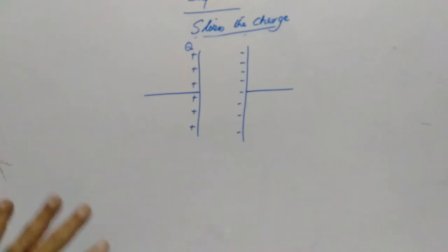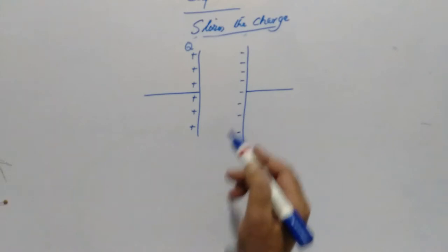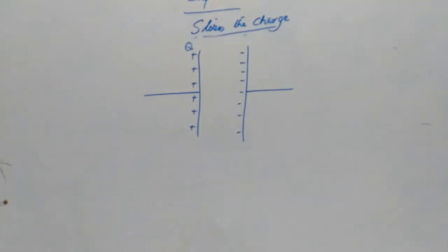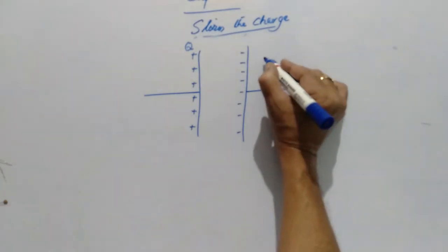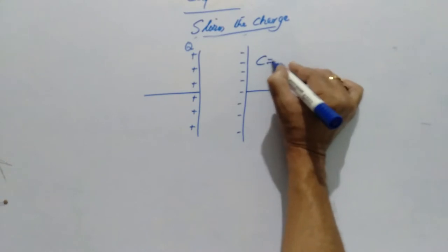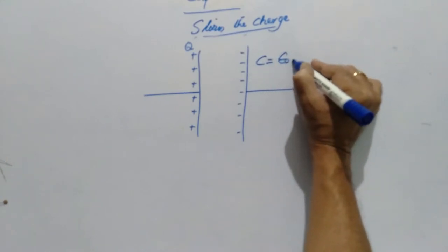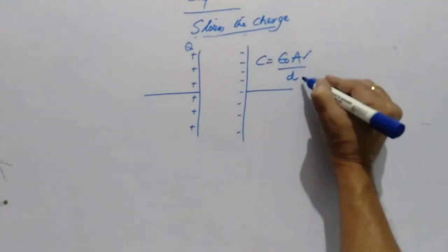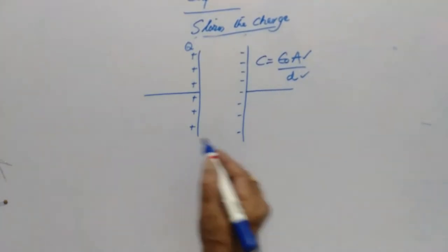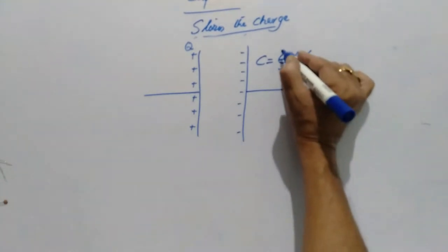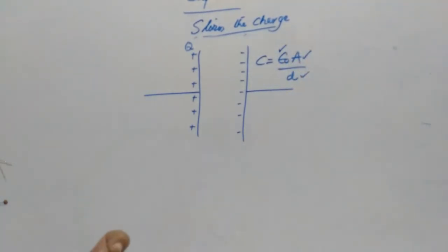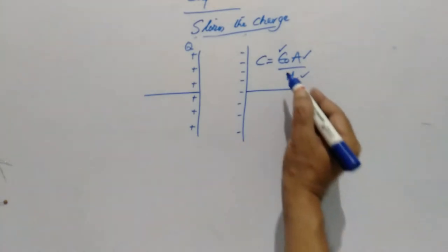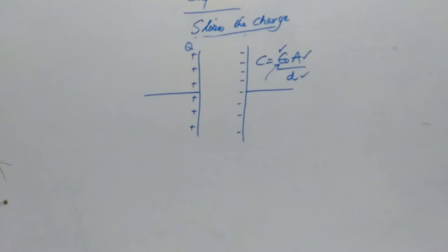Now, the target for us is to increase the capacitance without increasing the area nor changing the distance between the two plates. How do we do that? If you observe the formula, C is equal to epsilon naught A by D. In addition to area and distance, the capacitance depends on one more term — the permittivity.